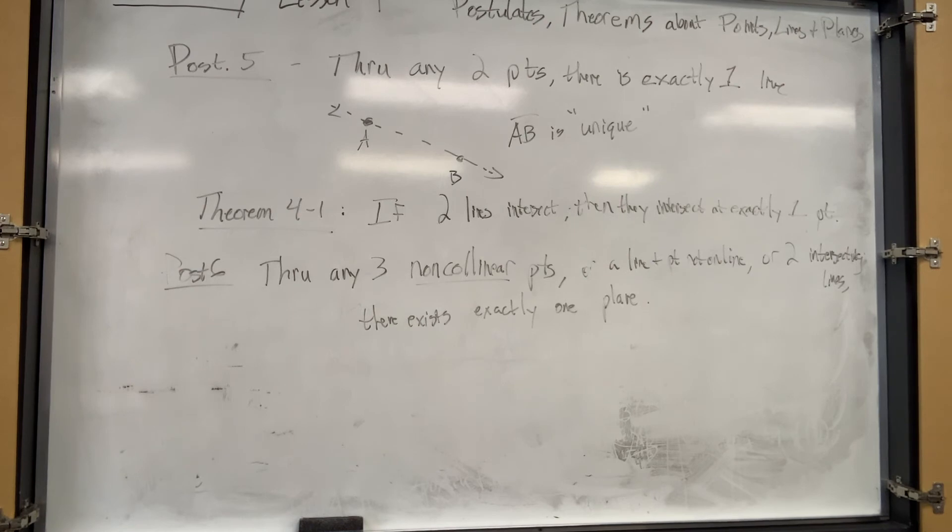There's a couple more of these guys. Postulate eight: if two points lie on a plane, then the line containing them also lies in the plane. That's kind of a duh thing. Like, you can call that whiteboard a plane. Well, if I put two points on that whiteboard, then the line, if I connect the two points, it's still going to be on that whiteboard.